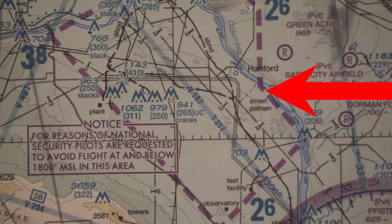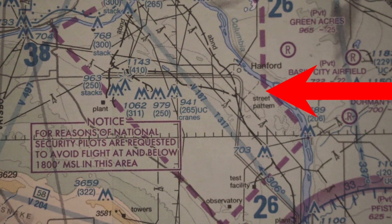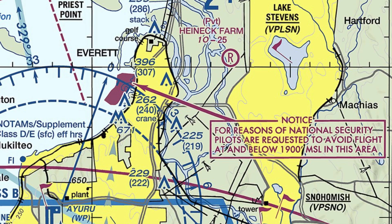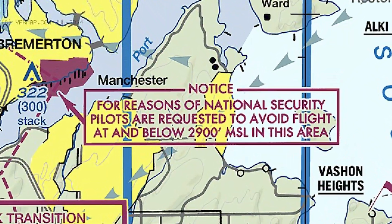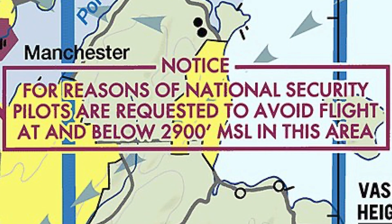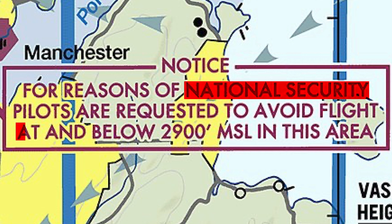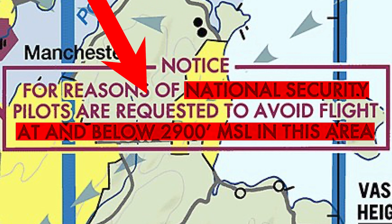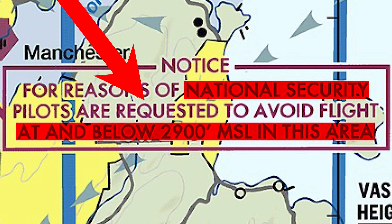This is a National Security Area, or NSA. They're noted with a thick dashed magenta line around the perimeter. Sometimes, however, they can be very small and only noted with a solid magenta filling. All NSAs are marked with an arrow to a note that tells us that it's an NSA and what altitude to stay above. You are only requested to stay above this altitude, and not required to.